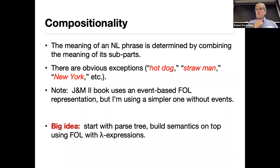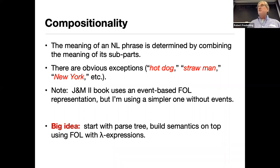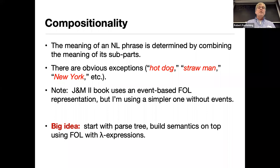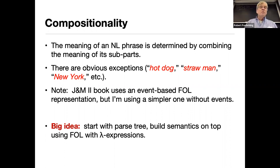The basic idea people use is compositionality, which means the meaning of the whole sentence is composed from the meanings of the parts. If you know the meanings of the words and you know the syntax of the sentence, you should be able to put together the meaning of the whole sentence — with a little bit of luck and a lot of ambiguity. For today, we're going to assume we're lucky and get the ambiguity right.